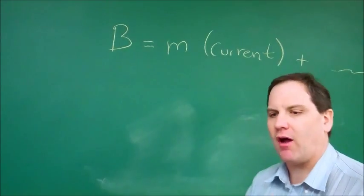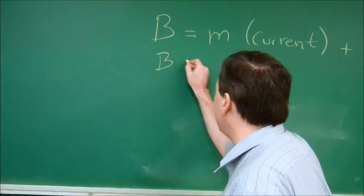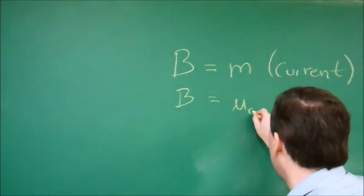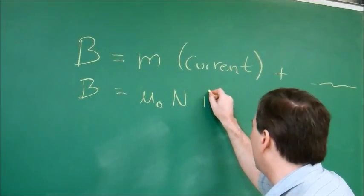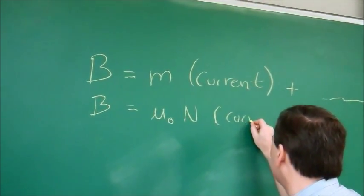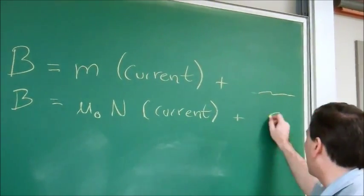Okay, so how from that do you figure out the experimental permeability of air? Well, we know that B is equal to mu zero N, where N is the number of turns per meter, times the current, plus a really small number called zero.